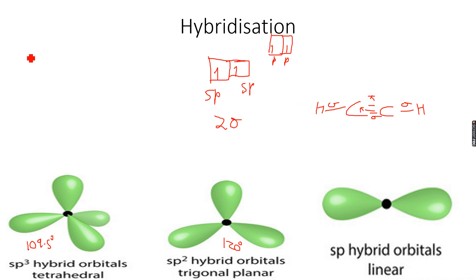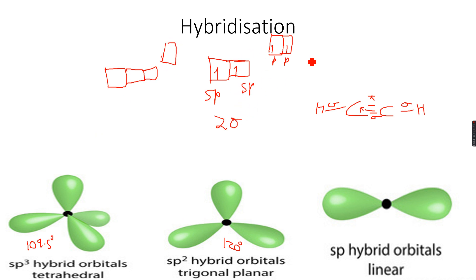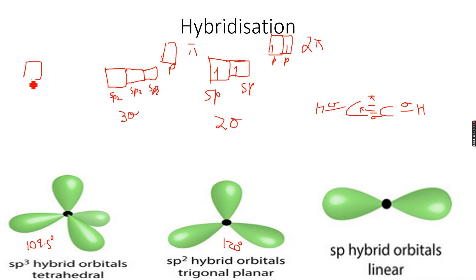For sp2 hybridization, there are three sp2 hybridized orbitals and one empty p orbital. So for sp2, all three give three sigma bonds and one pi bond.